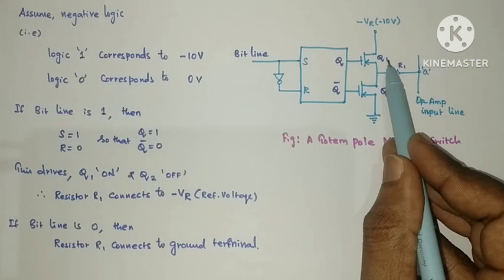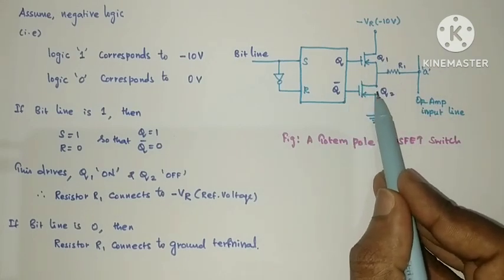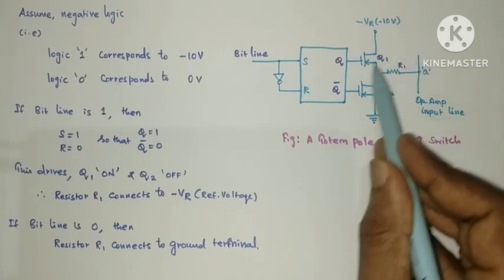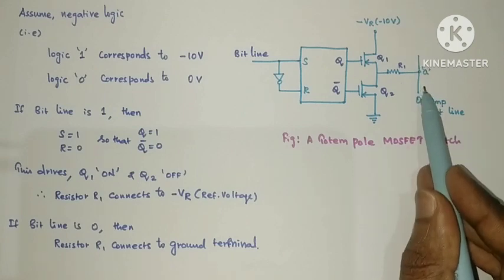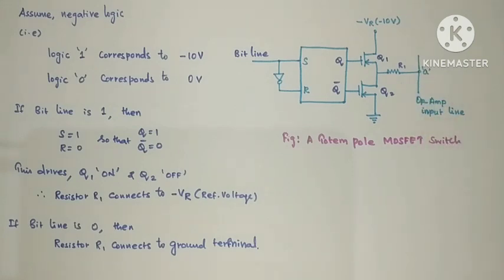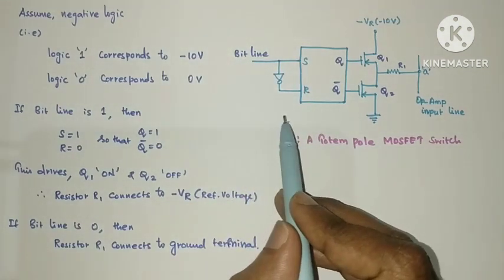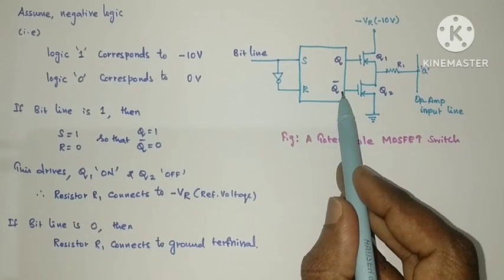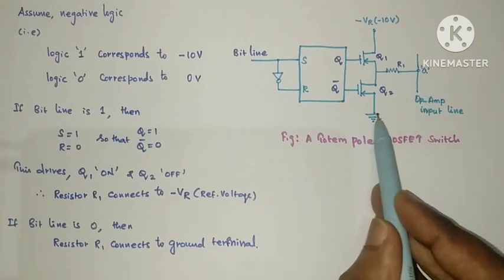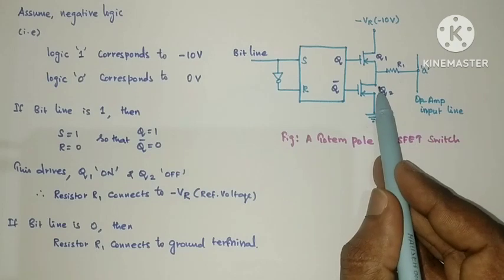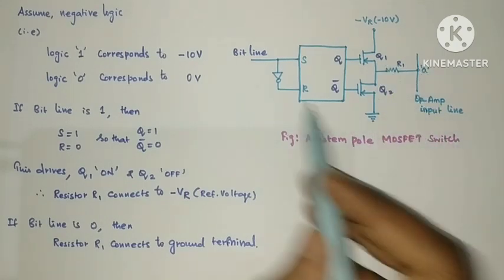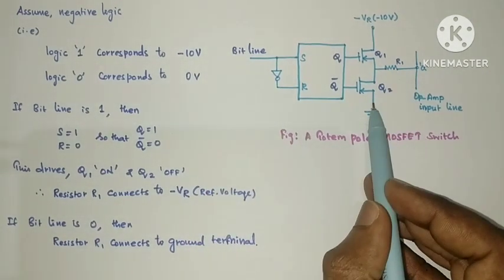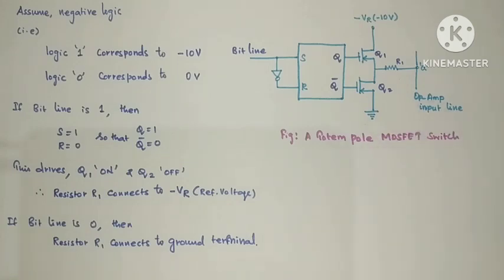Q equals 1 means Q1 will become ON condition, and Q-bar equals 0 means Q2 will become OFF condition. So with Q1 ON, the minus VR gets connected to R1 and reaches the operational amplifier input terminal. Now consider the other case: if the input bit line is 0, then S becomes 0 and R becomes 1, so Q becomes 0 and Q-bar becomes 1. In this case, ground potential 0 volt is connected to R1 through Q2, while Q1 is in OFF condition. So if the input bit is 1, R1 connects to reference voltage; if the input bit is 0, R1 connects to ground potential. This is the function of the totem pole MOSFET switch.